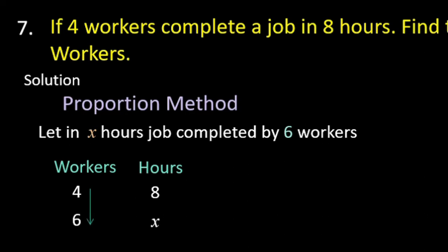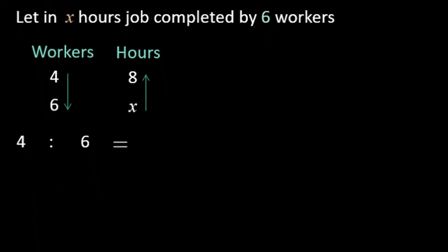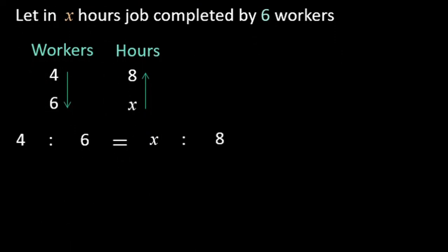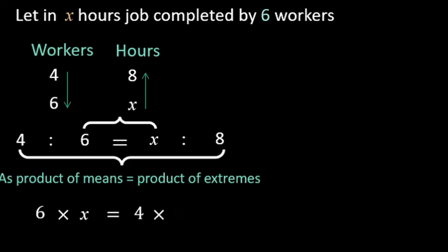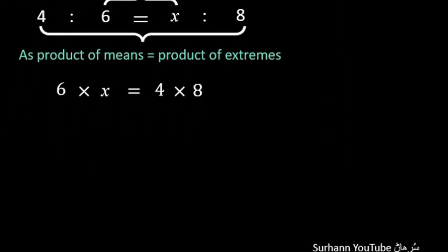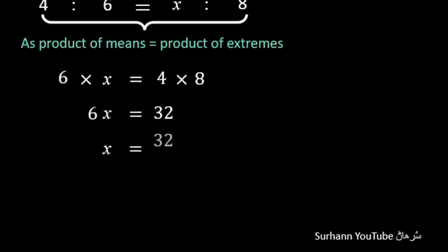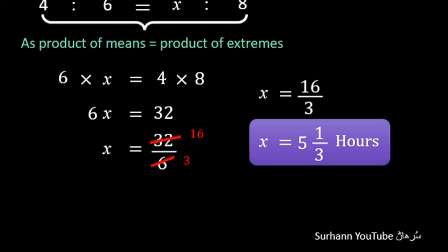Workers increase from 4 to 6, so arrow direction is from 4 to 6. More workers complete the job in less time, so x is less than 8, meaning arrow direction goes from x to 8. Product of means equals product of extremes: 6 × x = 4 × 8. Solving this gives x = 32/6, so 6 workers complete the job in approximately 5 hours and 20 minutes.